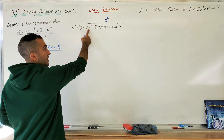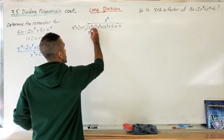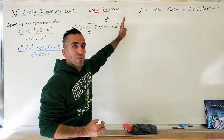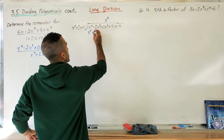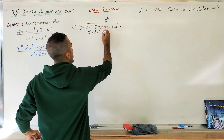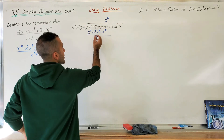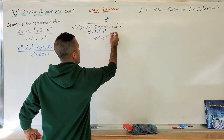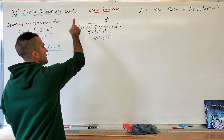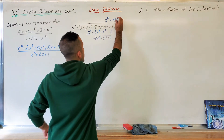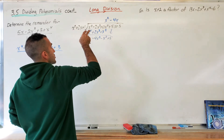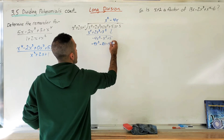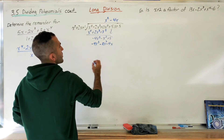x² times the divisor gives the first subtraction step. Notice I'm writing the x² term directly above the x² in the dividend — lining up your work helps you track where you're going. x² times 2x gives 2x³, and x² times 1 gives x². Subtract: negative 2 minus 2 gives negative 4x³, and the x² terms cancel leaving negative x². Bring down the next term and do it again. I need negative 4x, so multiply negative 4x through the trinomial: negative 4x³, negative 8x² — wait, that should be negative 5x.